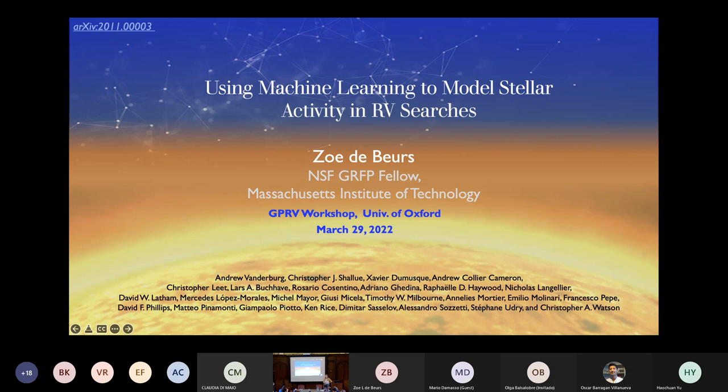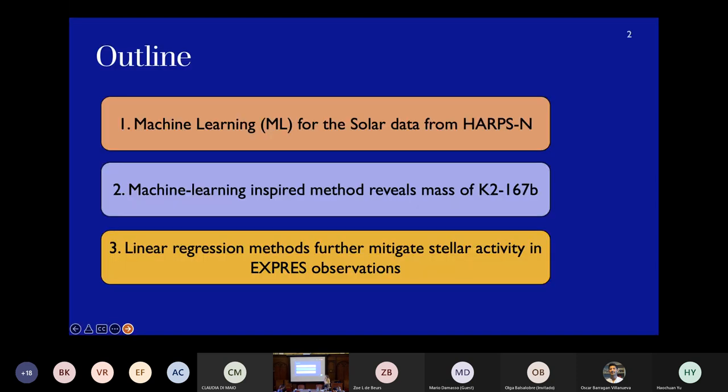It's focused on using various machine learning methods like neural networks to try to model solar activity signals in radial velocity searches, both for HARPS North Solar observations as well as some of the ESPRESSO observations that Lily told us about earlier today and some other targets as well. I started the talk first talking about our results for the solar data from HARPS North, then I'll talk about how we modified our machine learning methods to work on a smaller dataset of a specific extrasolar system called K2-167 to try to see if we would be able to remove the solar activity noise and actually reveal the mass that was previously hidden.